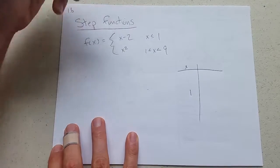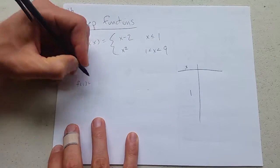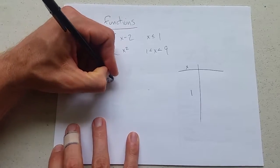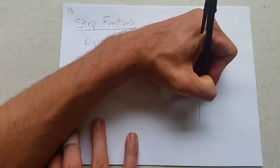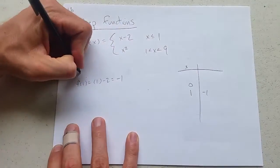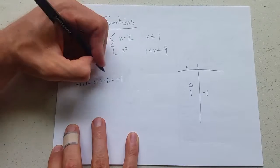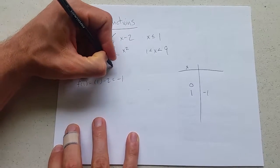When x equals 1 we're going to use piece 1 here. So f of 1, we're using piece 1. 1 minus 2 is negative 1. And let's go for 0. What is f of 0? Well 0 is less than 1. So we get 0 minus 2 equals negative 2.